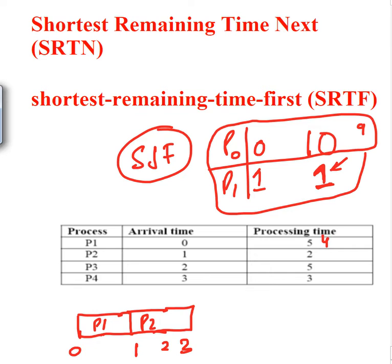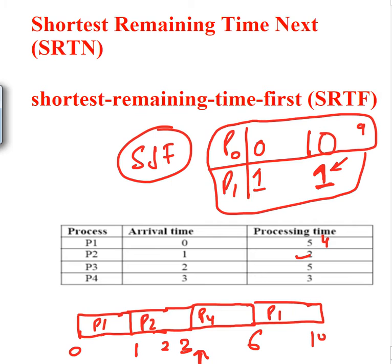At time three, P4 arrives with three units. Now in the ready queue we have P1 with four units left, P3 with five units, and P4 with three units. P2 is completed. Since all processes have arrived, it becomes like simple SJF — we pick the shortest. P4 is shortest at three units, so we load P4. It completes at time six. Then P1 runs four units up to time ten.